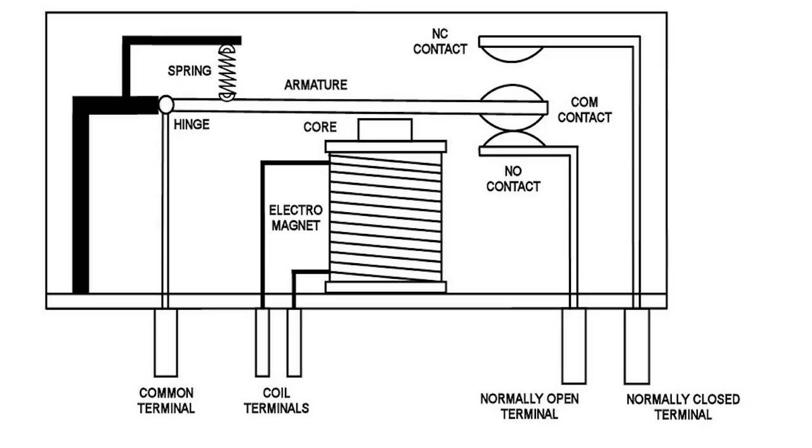This is a drawing of an energized relay. When a voltage is applied to the electromagnet coil, the current flowing in the coil produces magnetic energy in the iron core which pulls the armature down, and the common terminal switches to connect to the normally open terminal.